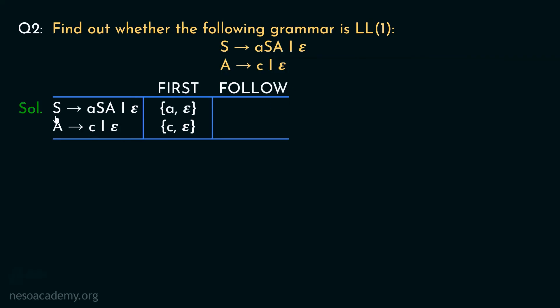Let's find out the follows. S is the start symbol, so in the follow of S we include dollar. Additionally, in the production rule S→aSA, S appears on the right-hand side followed by capital A. Since the first of A contains small c, we include small c in the follow of S. For the follow of A: A appears as the rightmost element in that production, so whatever follows S also follows A — giving us dollar and small c in the follow of A.